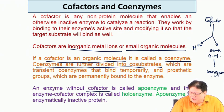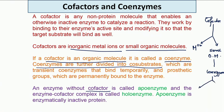Coenzymes are also cofactors, and coenzymes can be divided into two types. One type binds temporarily as the reaction proceeds and is then released — in that case it is also called a co-substrate, because like a substrate it goes into the active site and changes into a product. The coenzyme is transiently bound, and in many cases is released in a different form that has to be converted back to the coenzyme form.